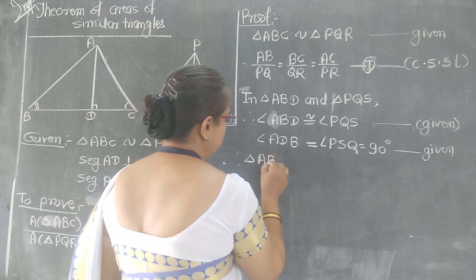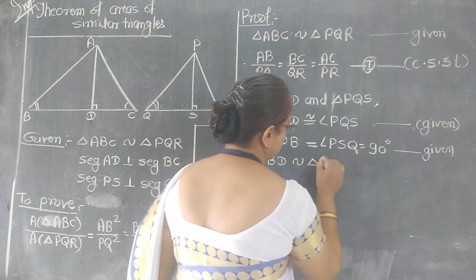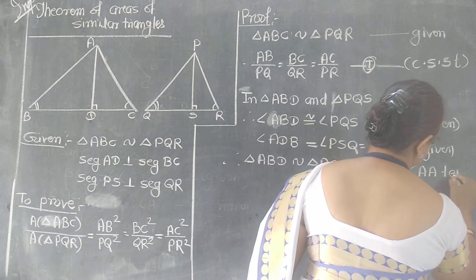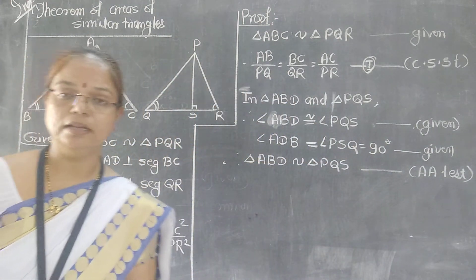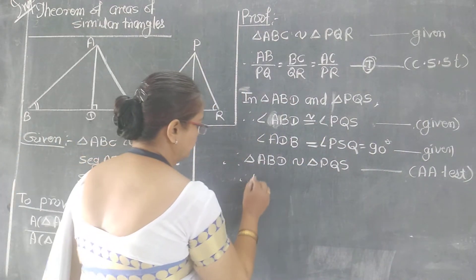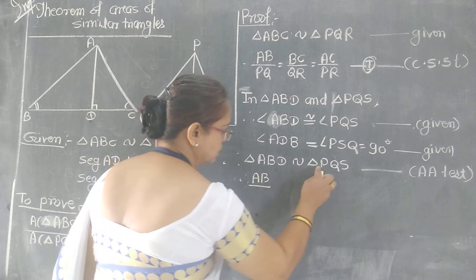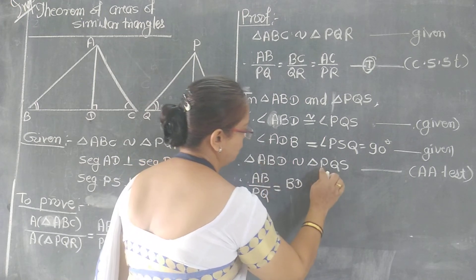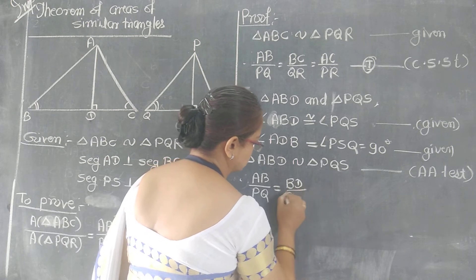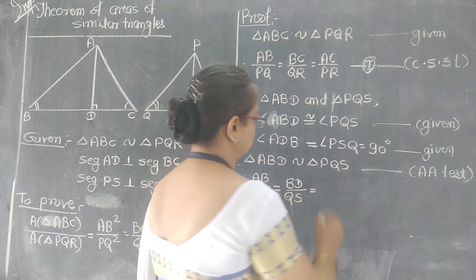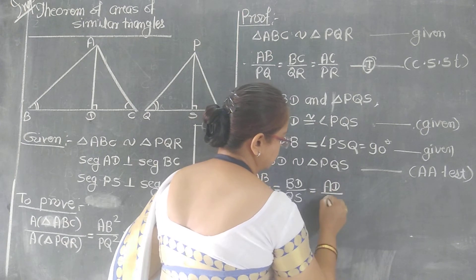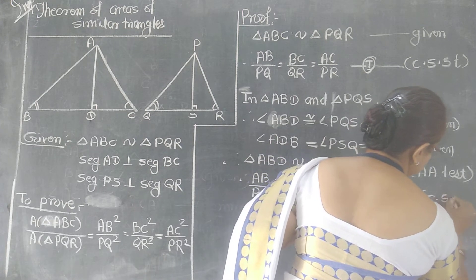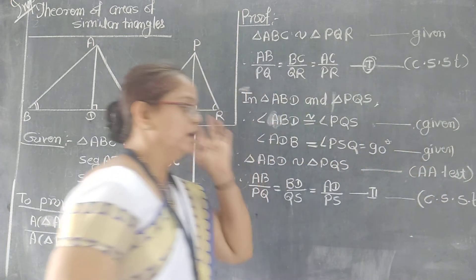Since triangle ABD is similar to triangle PQS, their sides are proportional. Therefore AB/PQ = BD/QS = AD/PS. This is equation number 2, with the reason being corresponding sides of similar triangles are proportional.